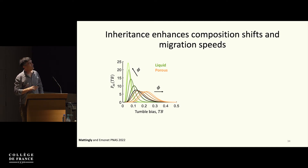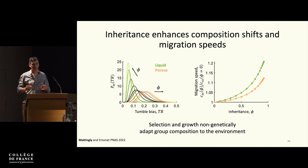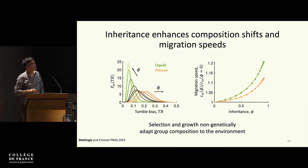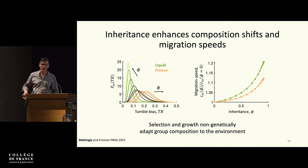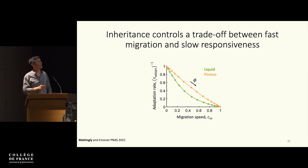Selection and growth are non-genetically adapting group composition to the environment — no gene expression changes, no regulatory mechanisms, no sensing the environment and expressing something new. It's just that diversity exists and collective behavior removes those not best in the current environment. But why wouldn't the population always have maximum inheritance? The problem is that with maximum inheritance, when you hit a new environment, it takes a very long time to get the cells needed to be the new leader. There's a trade-off between how fast you migrate in a uniform environment versus how fast you can adapt to a new environment.